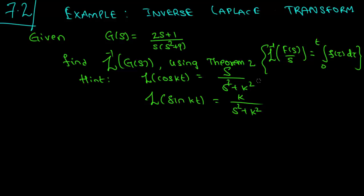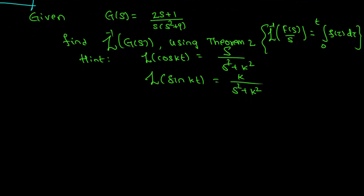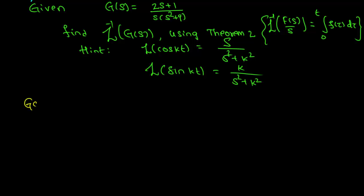We are also given the hint that the Laplace transform of cos(kt) is s / (s² + k²), and the Laplace transform of sin(kt) is k / (s² + k²). So we have g(s) = (2s + 1) / (s · (s² + 9)).